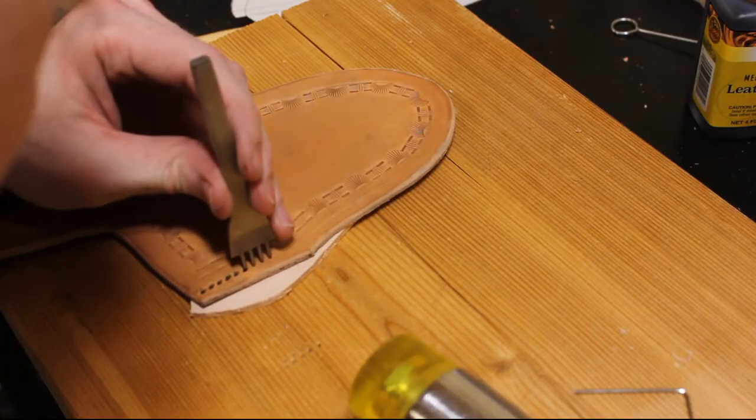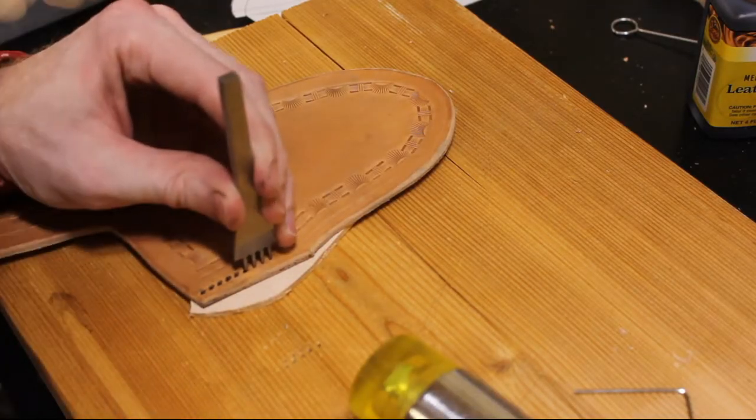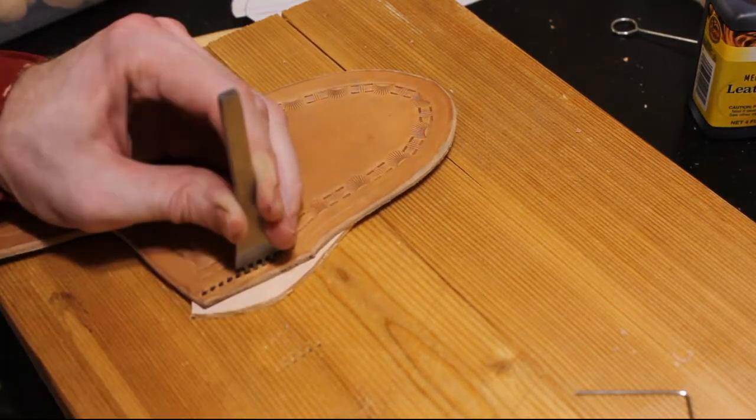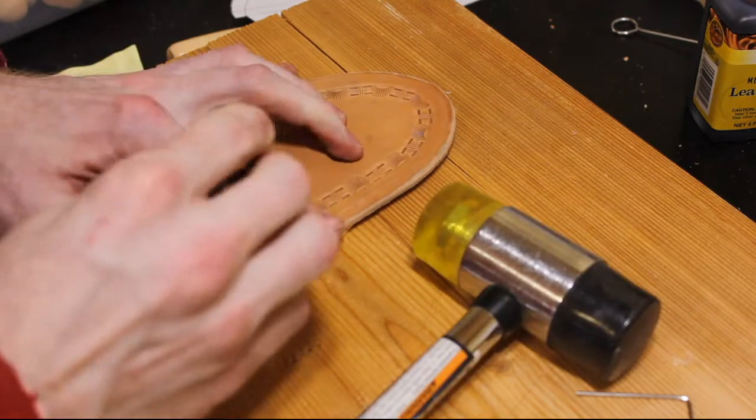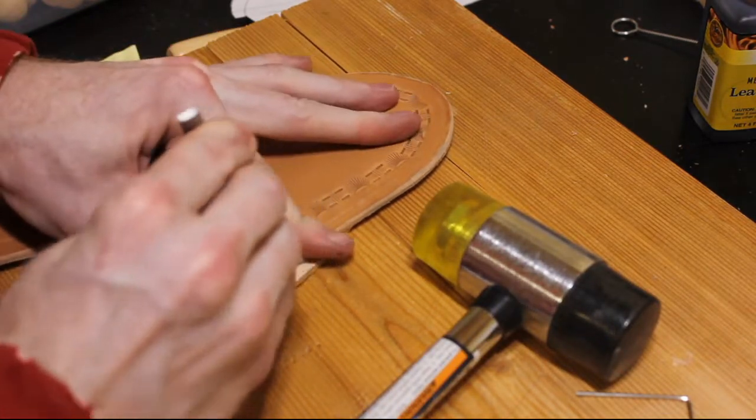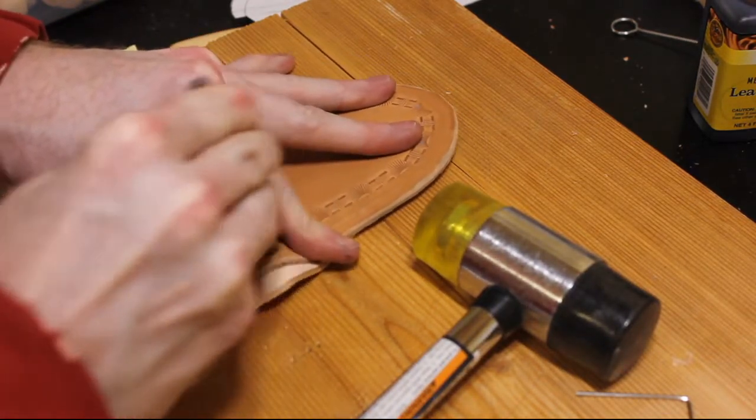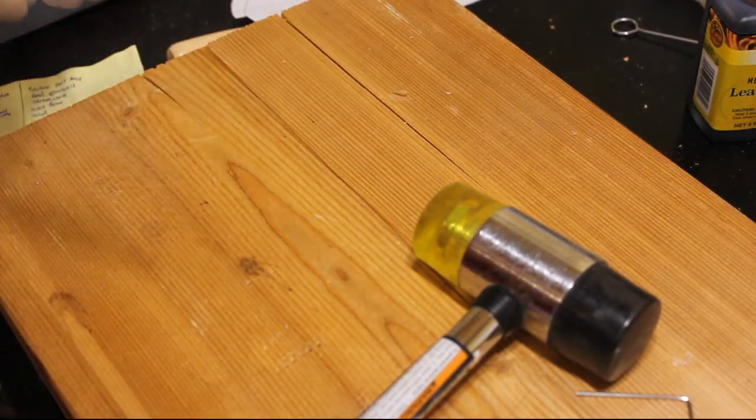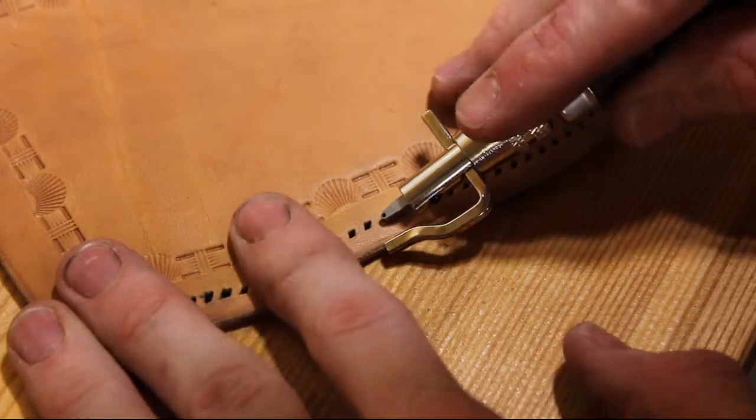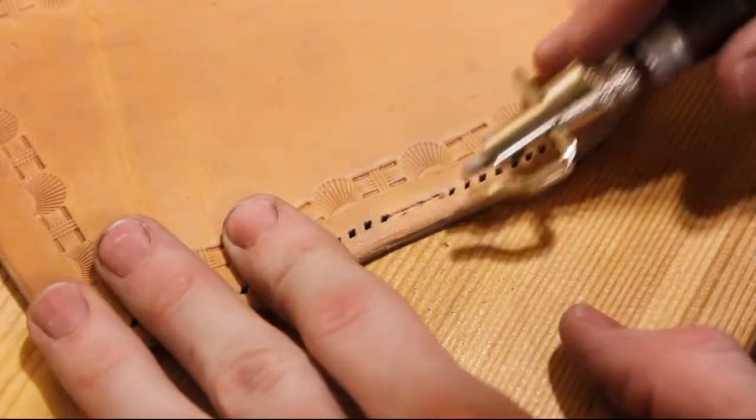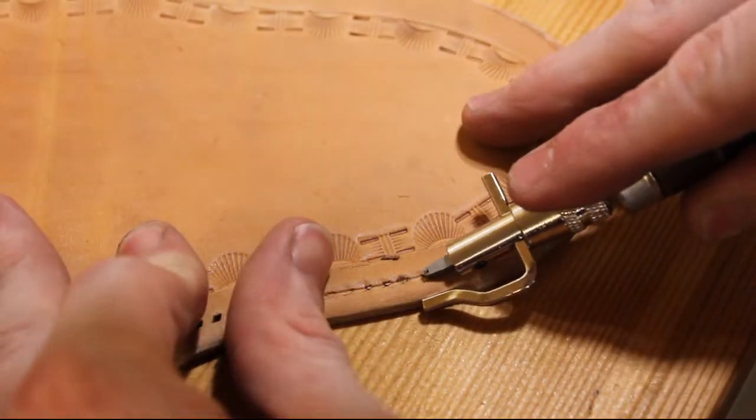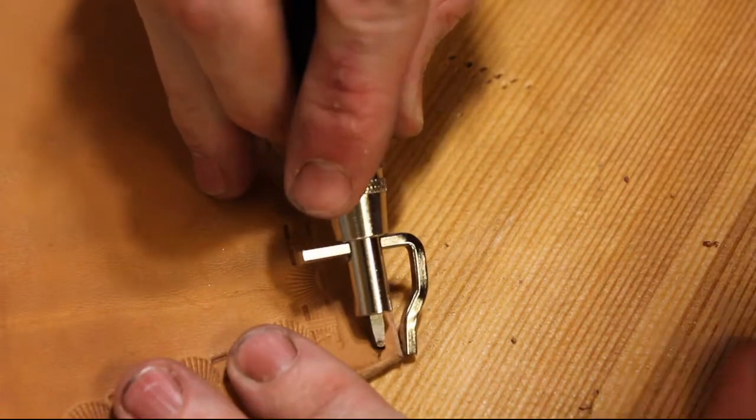I then took that same indenter and I indented a stitch line. Along this stitch line I used a pricking iron to prick some holes along the line. This thing is kind of a pain to be honest. It went in really deep and it was hard to take all the way out. So in reality what I ended up doing is I ended up drilling these holes. But I tried out the pricking iron at first. And then I took the legitimate groover and I created a groove along this stitching line so that the stitches will sit below the face of the sheath.